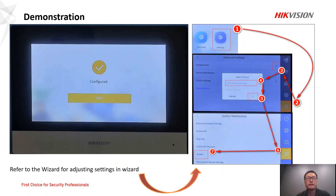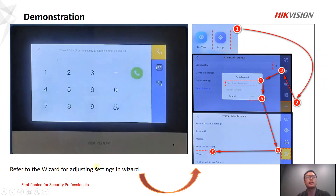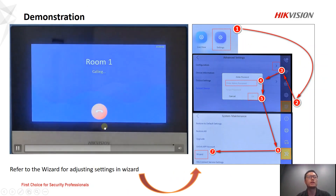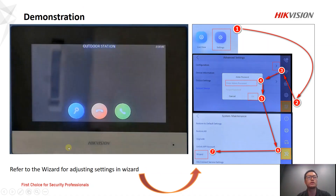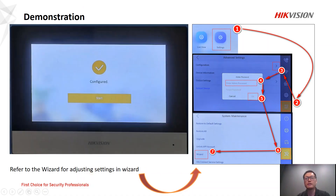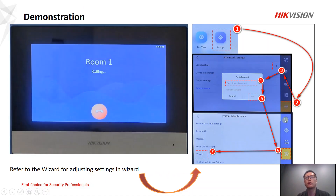After that, you can use the system. Click start for a live demonstration. In the indoor station, you can see the sub door station is registered — press it and you can call the sub indoor station. If you missed any settings in the above steps, you can go back to the wizard to adjust them. Simply click Settings and follow steps 1 through 7 to return to the wizard.